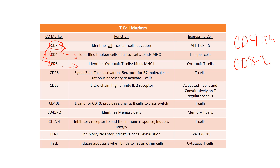Both CD3 and CD4, or CD3 and CD8, bind to the MHC molecules. CD4 always binds to MHC class 2, and CD8 always binds to MHC class 1. The TCR, CD4, CD8, MHC class 2, and MHC class 1 all have various invariant regions that allow these bindings to happen. So to summarize: CD4 is your T helpers, CD8 is your cytotoxic T cells, and CD3 is on all T cells.